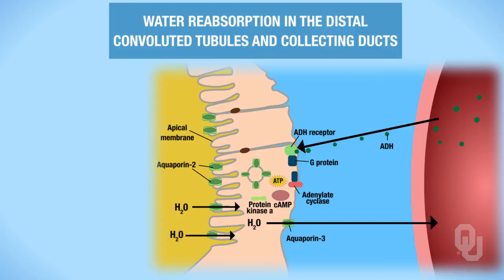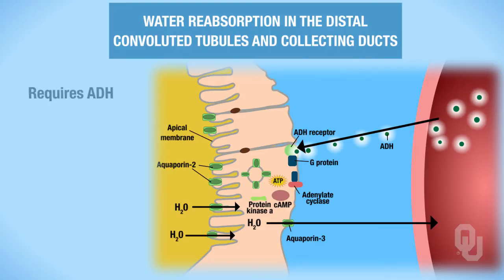Water reabsorption in the distal convoluted tubules and the collecting ducts requires ADH — antidiuretic hormone. Remember it's stored in the posterior pituitary and synthesized by the hypothalamus.